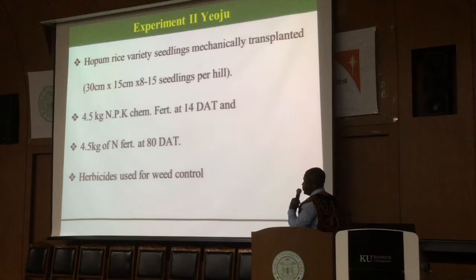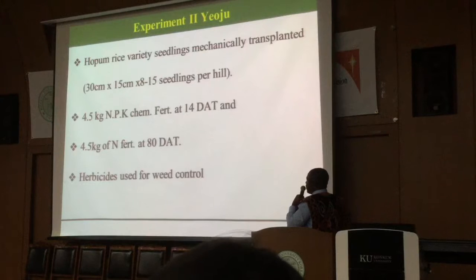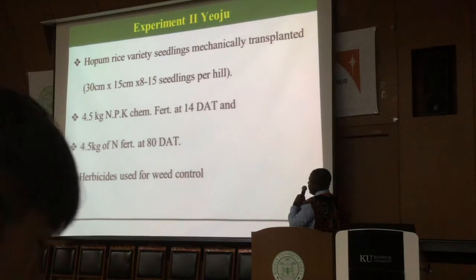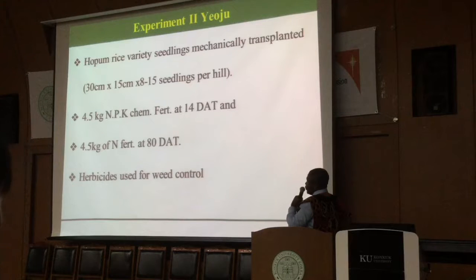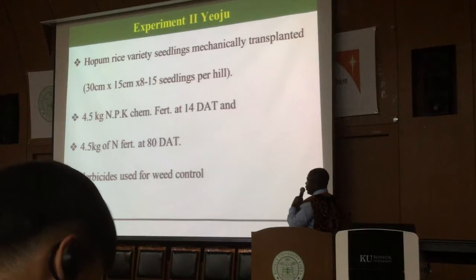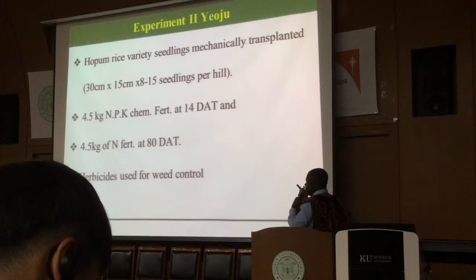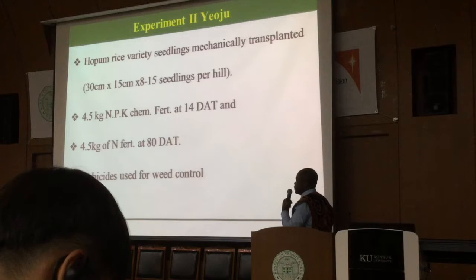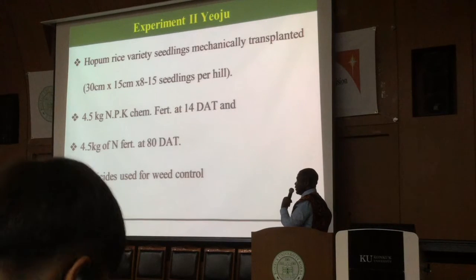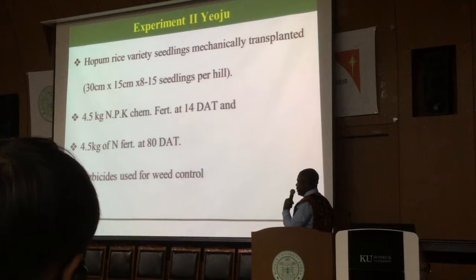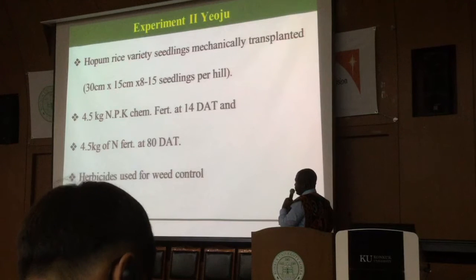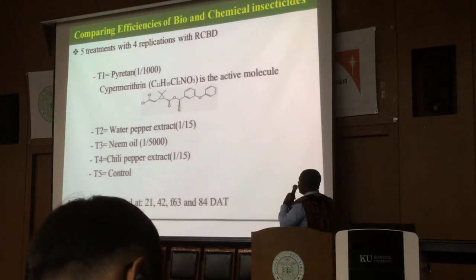In experiment two on conventional farming, where chemical inputs were used, we transplanted seeds of heavy rice variety at standard density and supplied plant nutrients using chemical fertilizers. We applied 4.5 kilograms of NPK fertilizers at 14 days after transplanting and 4.5 kilograms of nitrogenous fertilizers at 80 days after transplanting.